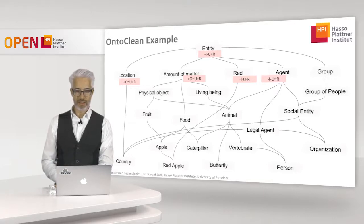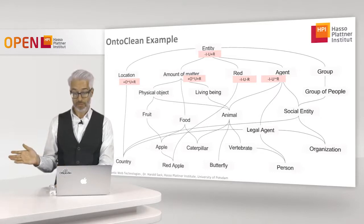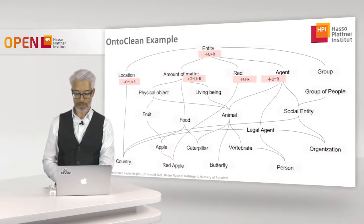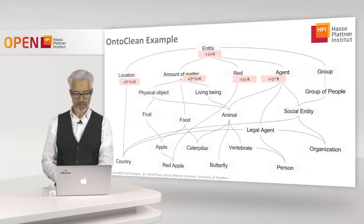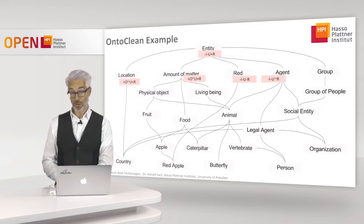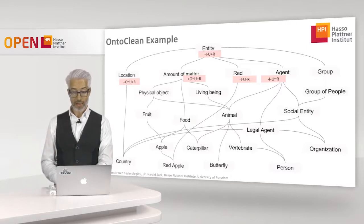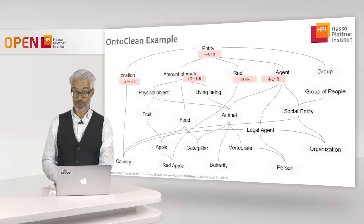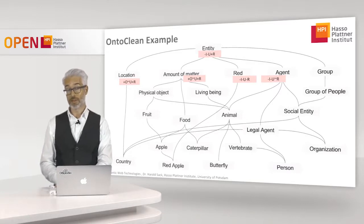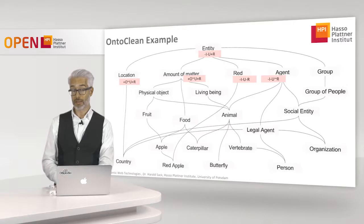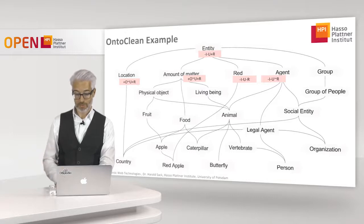For 'agent': an entity might be an agent, but agents can be very many different things, so there is no special identity criterion. The same with unity — agents might be considered whole, but with different kinds, there is no common criterion. And it is anti-rigid: if an agent ceases to be an agent, the entity might still endure but is not necessarily an agent anymore.